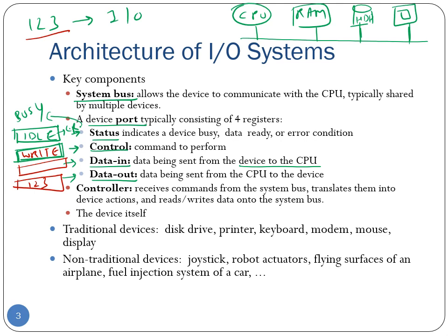In addition to these registers, I/O devices also have a controller — think of the I/O controller as the brain of the I/O device. The I/O controller is responsible for receiving commands from the CPU via the system bus and translating these commands into device-specific actions, such as reads and writes of data inside the I/O device and onto the system bus.